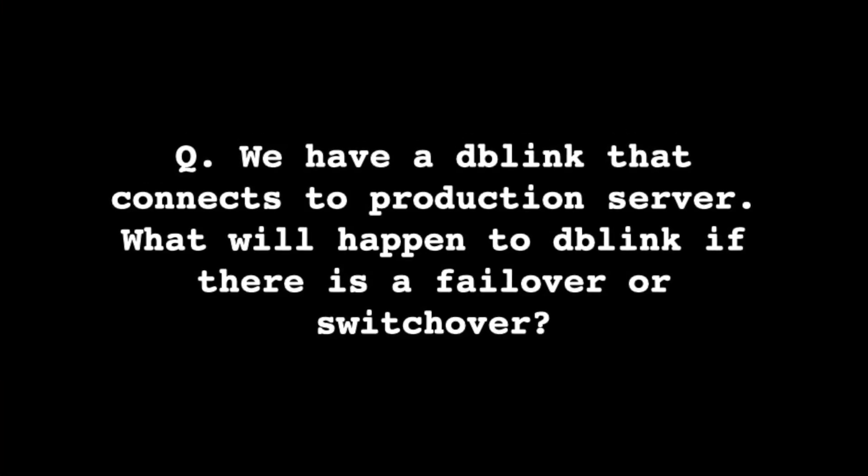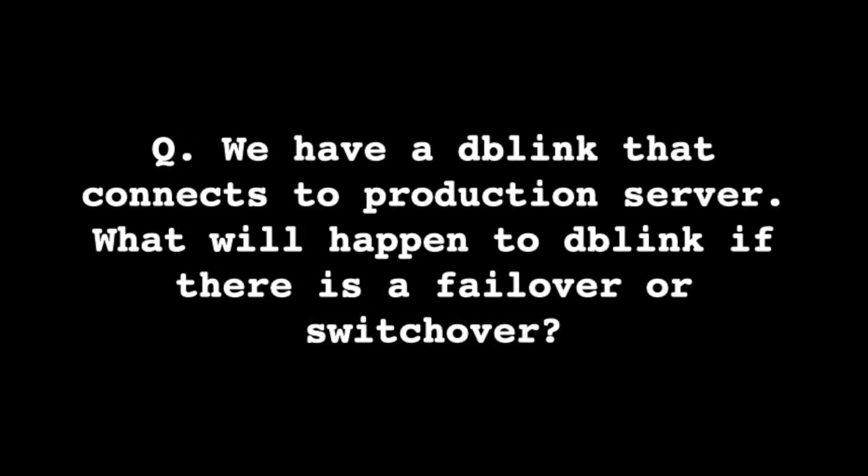Next question: we have a DB link that connects to a production server — what will happen to the DB link if there is a failover or switchover? In Data Guard networking, you create a service rather than connecting directly to primary or standby. If you connect directly to the primary server and then perform a switchover or failover, the application will break because it will try to connect to the same primary server which is no longer primary. So you create a service in Data Guard networking that runs only on the primary server.